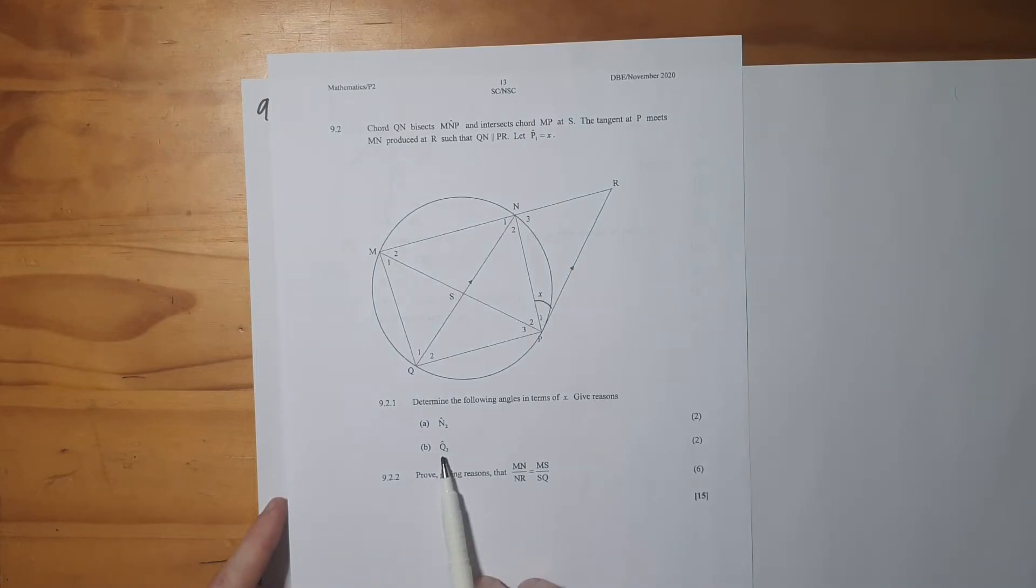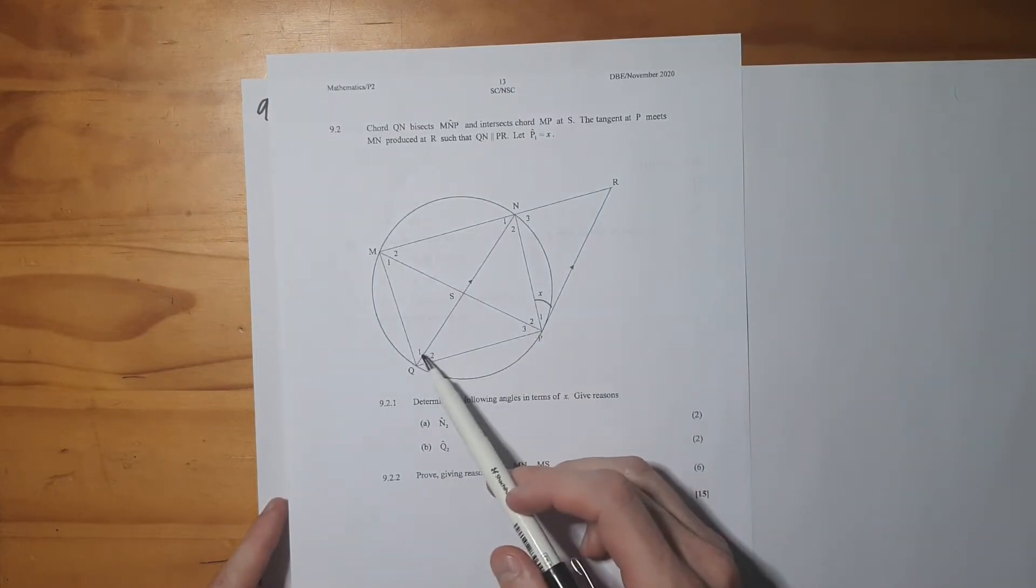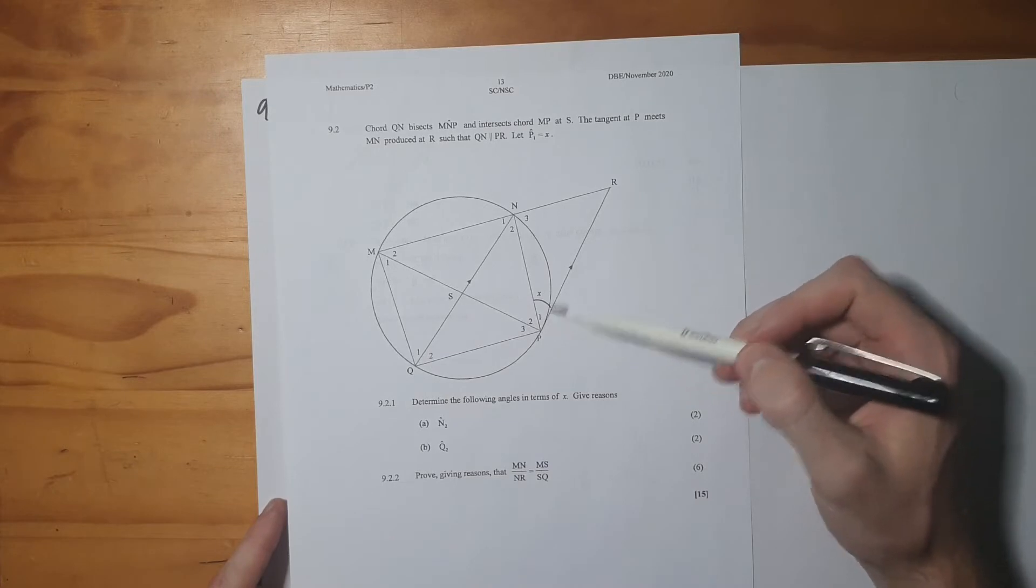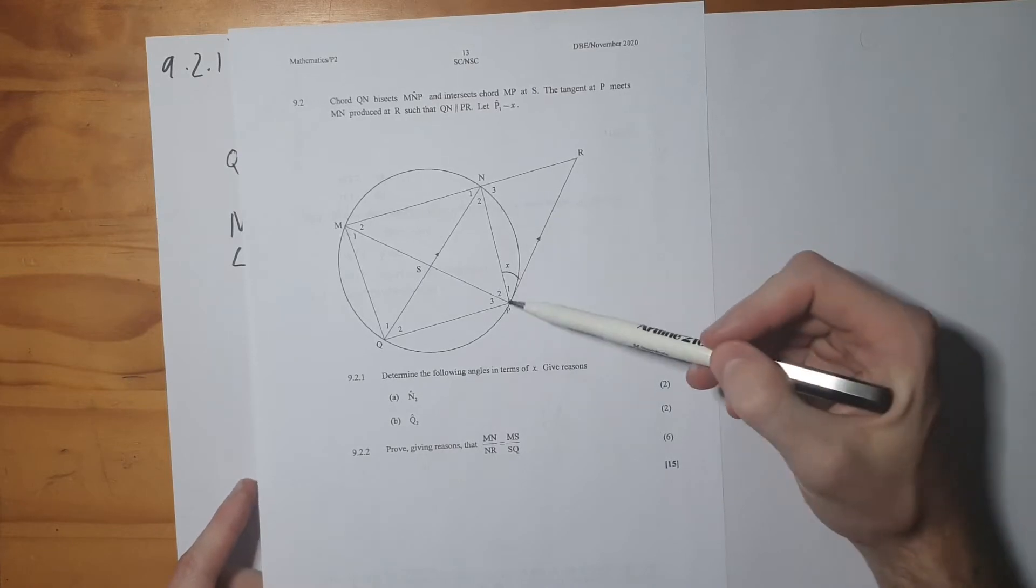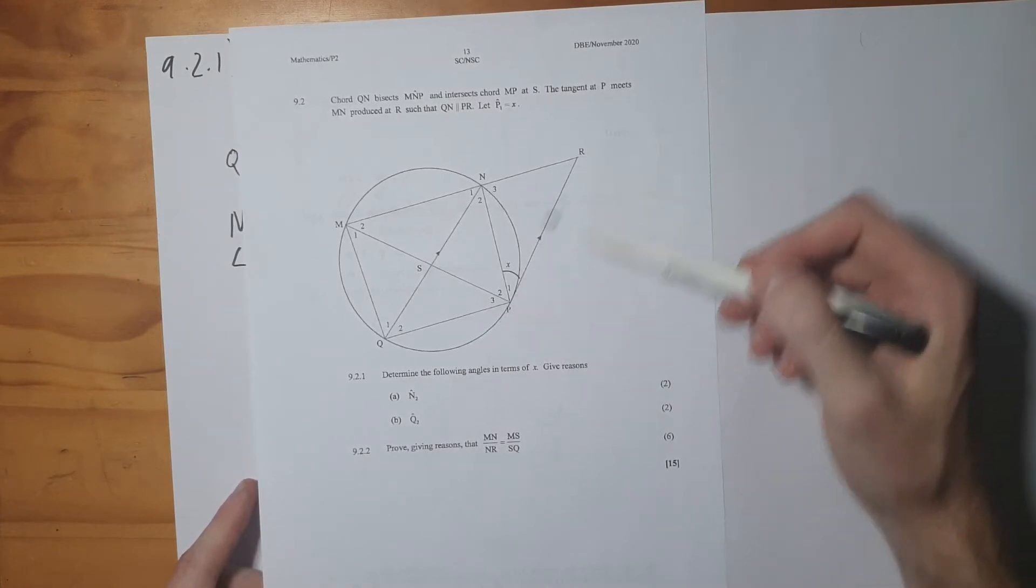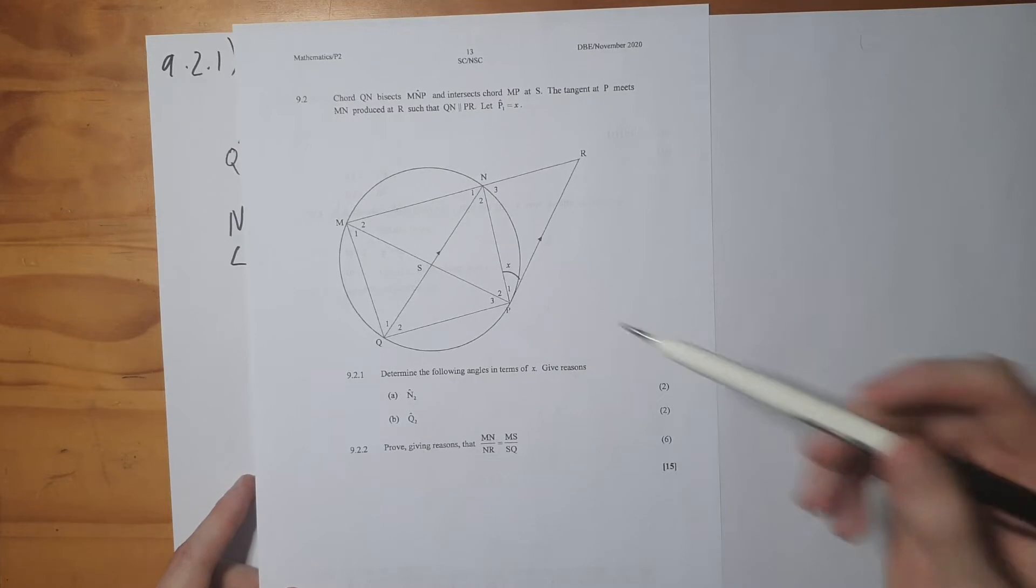So you can now go and fill in that N2 equals to X. We can see the Z or the N, whichever way you want to picture it, happening over there. Now it says Q2. So here's Q2 over here. Now we know that PR is a tangent. In most of these questions, if they provide a tangent line to the circle, we're going to be using tan chord theorem some way.